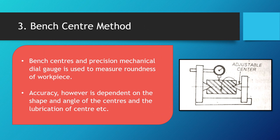The bench center method is the third type of method for finding the roundness of a workpiece. In this method, bench centers and a precision mechanical indicator such as a dial gauge, air gauge, or electronic indicator may be used to measure out-of-roundness on a radial basis. The accuracy is affected by the shape and angle of the centers holding the workpiece, the condition of the center holes, and the lubrication of the centers.